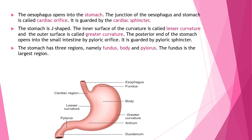The esophagus opens into the stomach. The junction of the esophagus and stomach is called the cardiac orifice, and it is guarded by the cardiac sphincter. The stomach is J-shaped. The inner surface of the curvature is called the lesser curvature and the outer side the greater curvature. The posterior end of the stomach opens into the small intestine by the pyloric orifice, guarded by the pyloric sphincter.